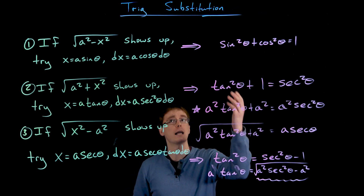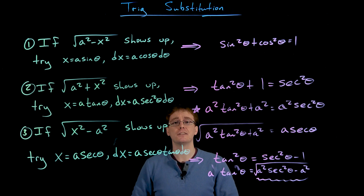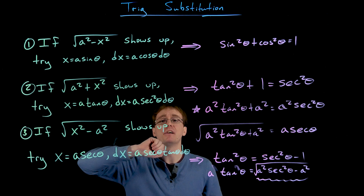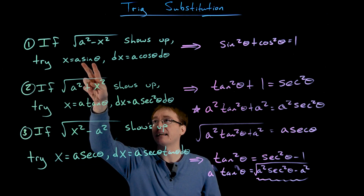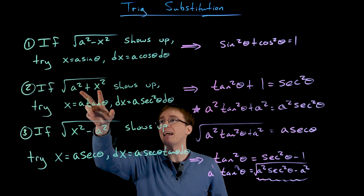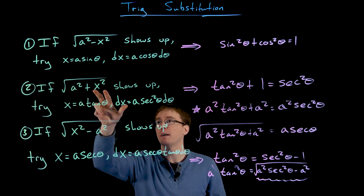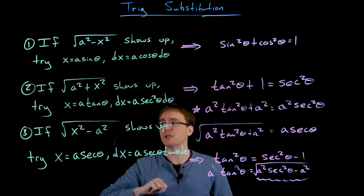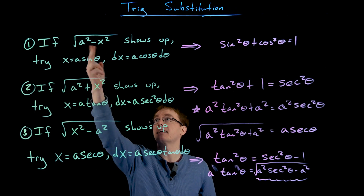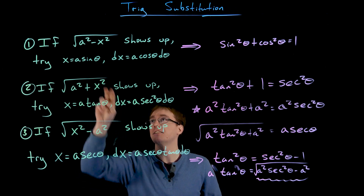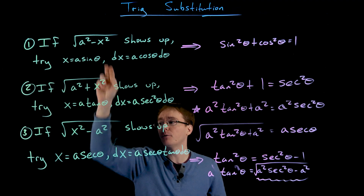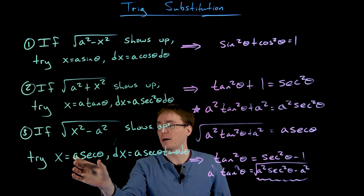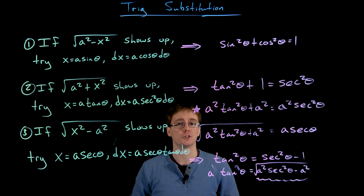The type of trig substitution depends on the root quantity. If it's a constant squared minus a variable squared, try a sine substitution. If we have addition of a constant squared and a variable squared, try a tangent substitution. And this third case is the mirror of the first: instead of constant minus variable squared, we have variable squared minus constant squared — that's when we use a secant substitution.